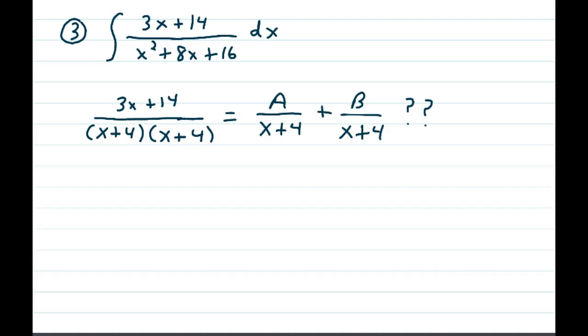Often students will say, well, I'll just make two fractions, both having x plus 4. So I have A over x plus 4 plus B over x plus 4. But there's a slight problem here, so we'll take a look at what that problem is.